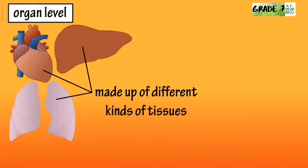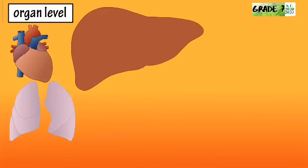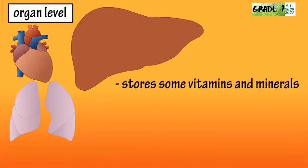Organs are made up of different kinds of tissues that together can perform different functions in the body. For example, the liver, which is an organ located in the abdominal region of the body, stores some vitamins and minerals.